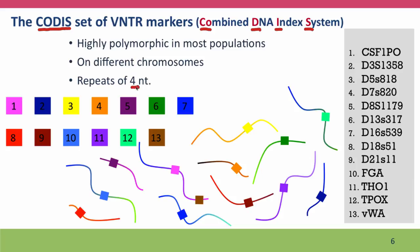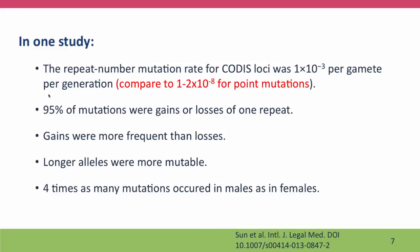They're typically repeats of just four nucleotides. This achieves the best balance between mutations that generate diversity and mutations that would change the alleles from a parent to a child, which would interfere with identification analyses. One study found that using the CODIS markers, the frequency of changes in copy number was about 10 to the minus 3 per gamete per generation — from parent to child. This may seem like a small number, one in a thousand, but it's enormous compared to the rate of point mutations over the same period, which is about 10 to the minus 8 — a 100,000 times faster mutation rate.